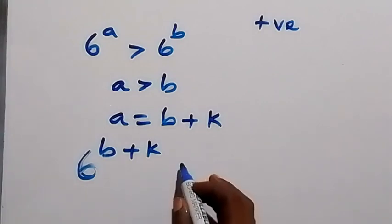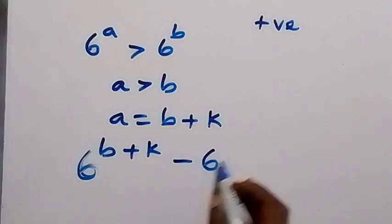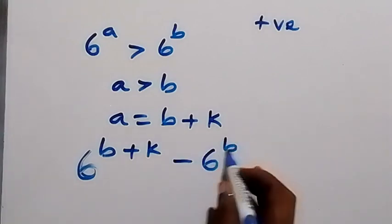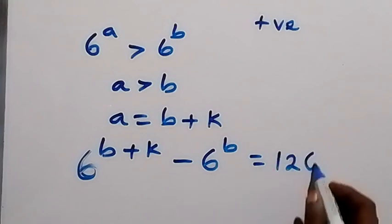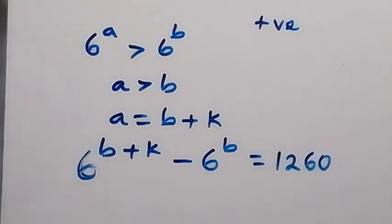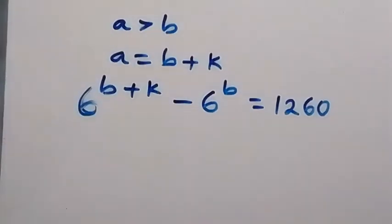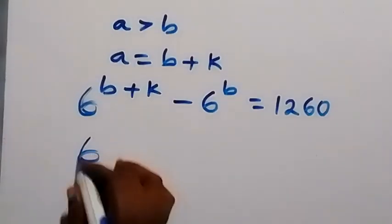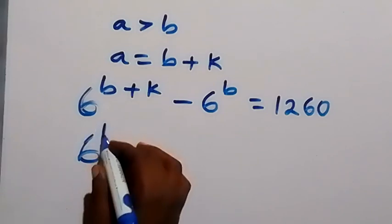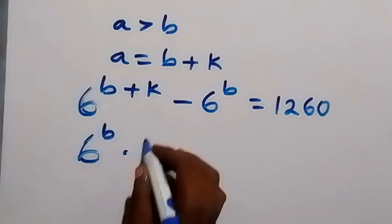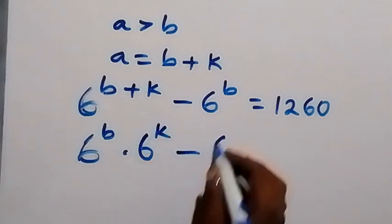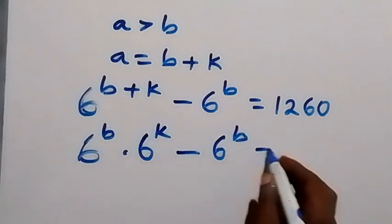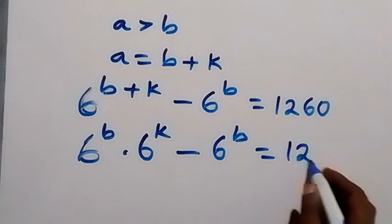So we have 6 raised to power (b + k) minus 6 raised to power b equals 1260. Using the law of indices, we can rewrite this as 6 raised to power b multiplied by 6 raised to power k, then minus 6 raised to power b, equals 1260.